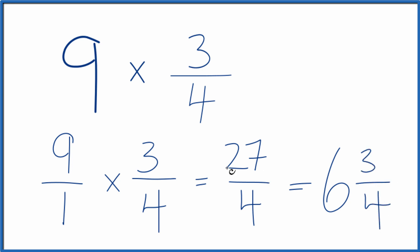Bring the 4 across. So 27 fourths, the fraction, also equals the mixed number 6 and 3 fourths.